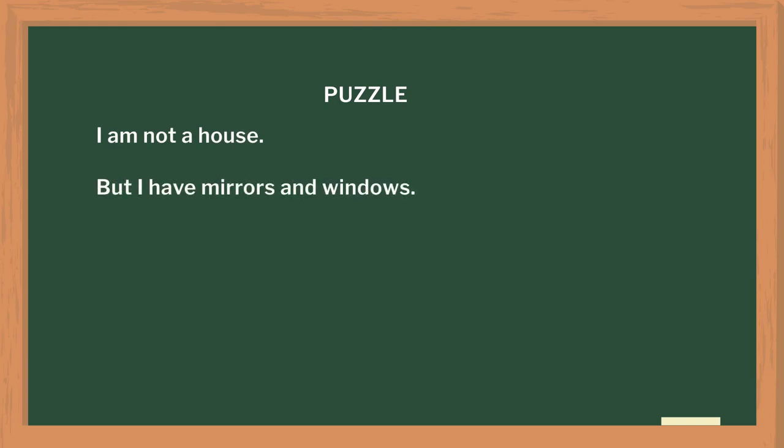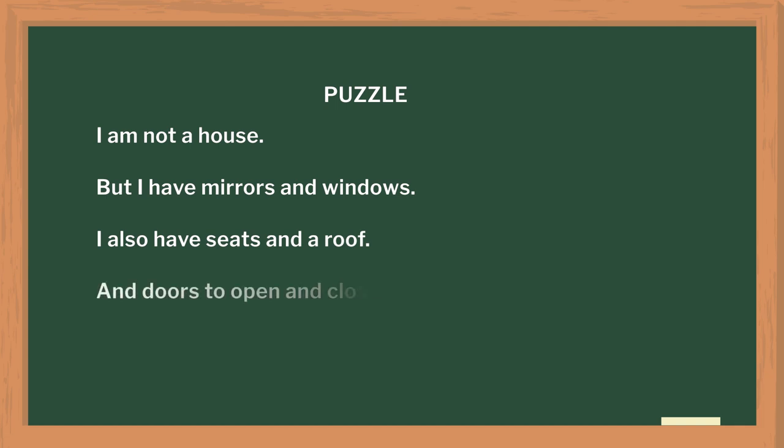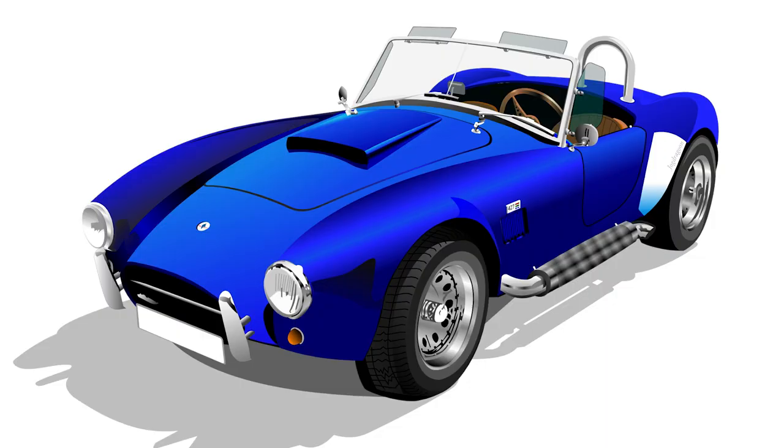This discussion can be made more interesting with puzzles. For example: 'I am not a house, but I have mirrors and windows and seats and a roof and doors to open and close. Who am I?' The answer, as you might have guessed, is a car, which is a very good example of a complex machine and is very easily imaginable by students of class 5. The answer can be disclosed after a few attempts.